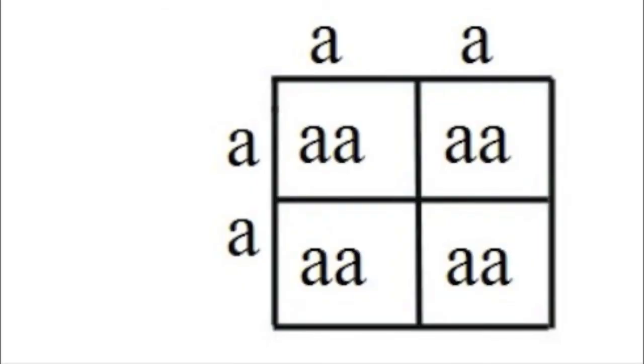What if you were to breed a full albino to a full albino? If you think about it, you're going to have 'aa' on the bottom and 'aa' on the side — in every square it's going to be all 'a's. You're going to produce just a bunch of 'aa's — it's all albinos, 100%.